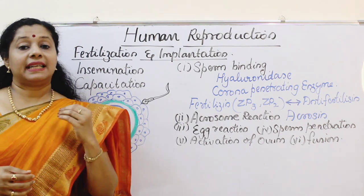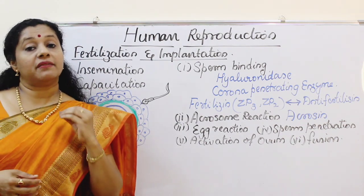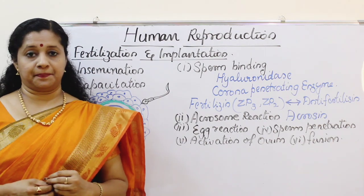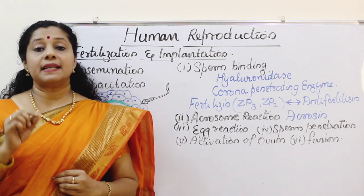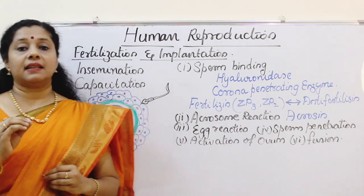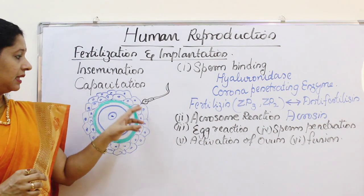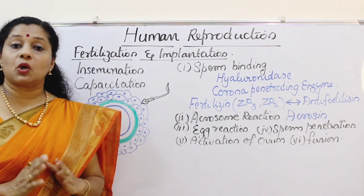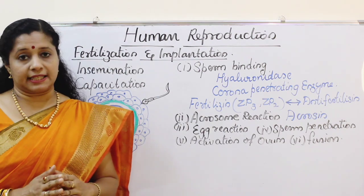With the help of all these factors, the sperm can reach the ovum in 5 minutes, moving at 1.5 to 3 millimeters per minute. Once it comes near the ovum, it can carry out the process of fertilization.